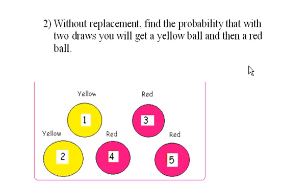Without replacement, find the probability that with two draws you will get a yellow ball and then a red ball. So what's happening here is that we close our eyes and reach in and grab a ball. We observe what it is and then we don't put that ball back.